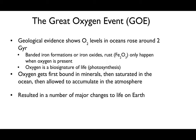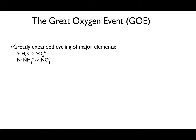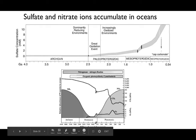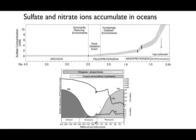Once oxygen started accumulating in the atmosphere, this resulted in huge changes on the planet. It greatly expanded the cycling of major elements including sulfur and nitrogen. Before the Great Oxygenation Event, sulfate was very low; after it, there was a rapid expansion of sulfate. Similarly, ammonia was prevalent early on, but after the GOE we see an expansion of nitrate—a brand new metabolism opening up that converts ammonia into nitrate.